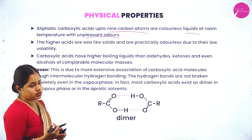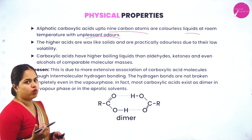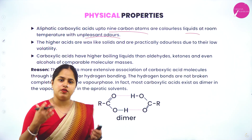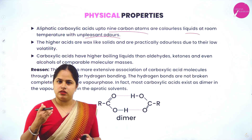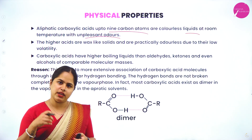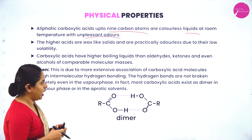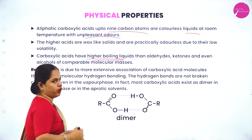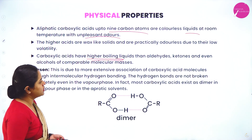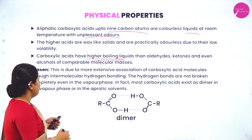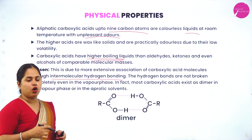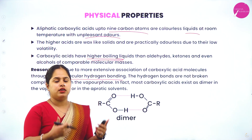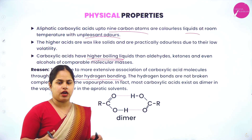The higher acids are wax-like solids and are practically odorless due to their low volatility — to get the smell a substance must be volatile and able to evaporate. Carboxylic acids have higher boiling points than aldehydes, ketones and even alcohols of comparable molecular mass. This is due to more extensive association of carboxylic acid molecules through intermolecular hydrogen bonding.